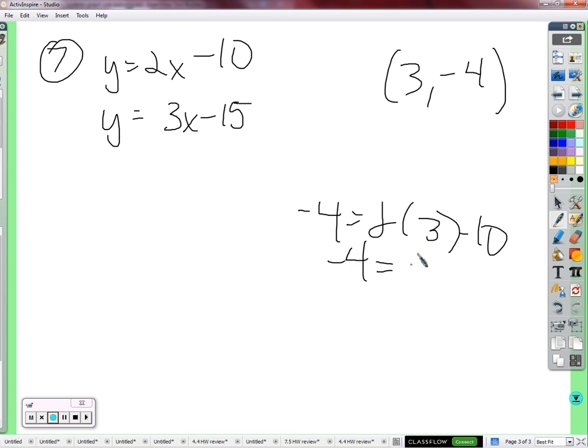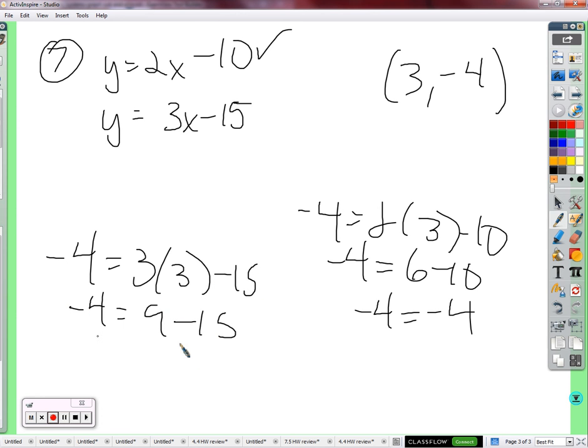So, we're going to see, is this guy, 3, negative 4, is it a solution to this system of equations? How do we check? We plug in those two points. That's what the solution is. It makes the equation work. It makes both equations work. If it doesn't, so negative 4, negative 4 equals 2 times 3 minus 10. That's negative 4. Is that equal to 6 minus 10? Negative 4. So, yes. Check. We've got to check the other equation. Negative 4 equals 3 times 3 minus 15. That's 9 minus 15. Is that negative 4? No, it's negative 6. So, no, it's not true. The answer would be no.